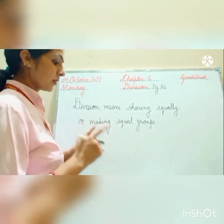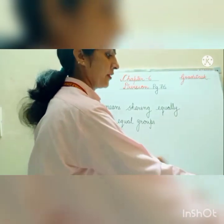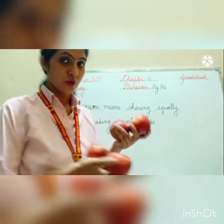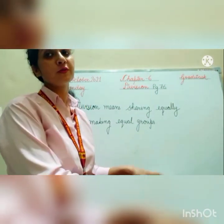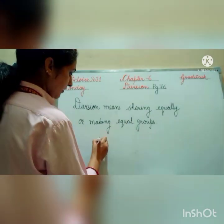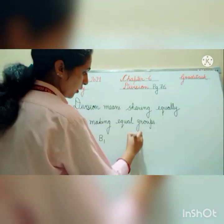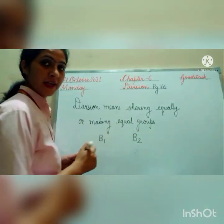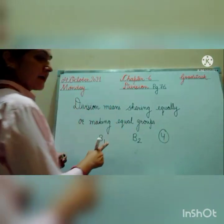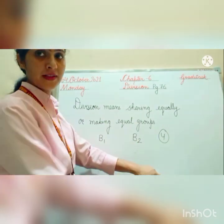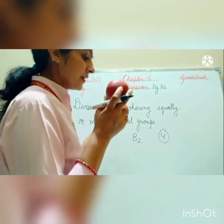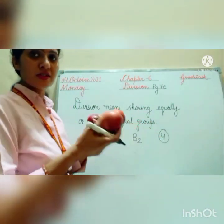So suppose I am having 4 apples. I have to distribute these 4 apples to 2 students — suppose Boy 1 and Boy 2. I am having 4 apples. So I have to distribute these 4 apples among 2 students equally. How will I divide this? How will I distribute this?